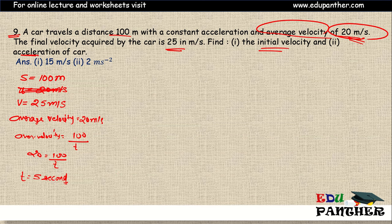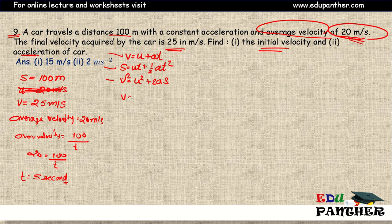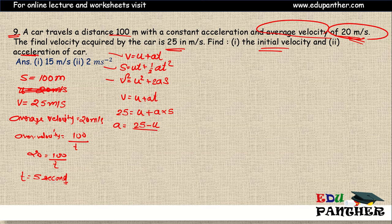Now we want initial velocity. We have three formulas: v = u + at, s = ut + ½at², and v² = u² + 2as. We can use any of these formulas, but in all three cases we need acceleration. So we will use two formulas together. Using v = u + at: final velocity is 25, u is unknown, t is 5 seconds, so acceleration a = (25 - u) / 5.